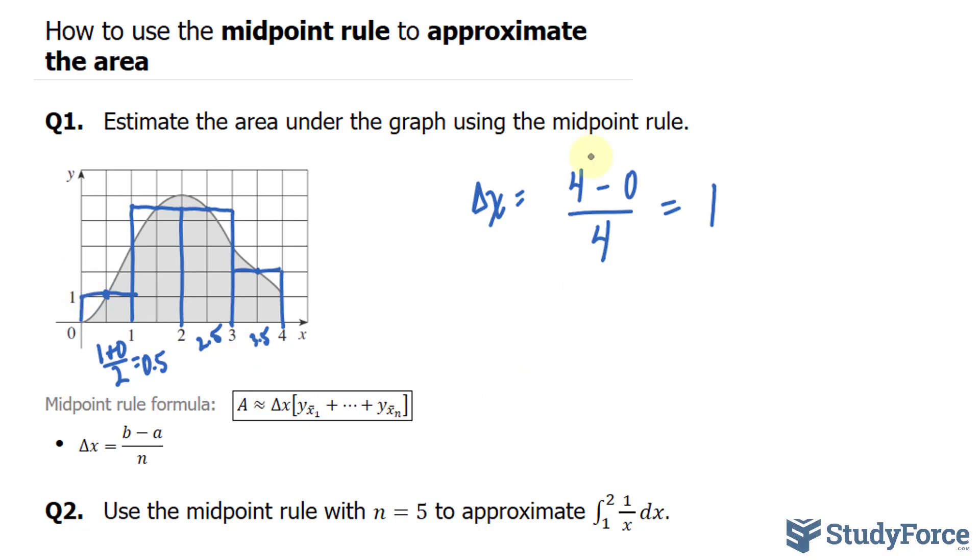Let's go ahead now and plug all this information in. We have delta x, it's equal to 1. We'll substitute that into there. So the area is approximately 1 times, and y sub x bar, the average here, was at 0.5, and it extended all the way to 1.